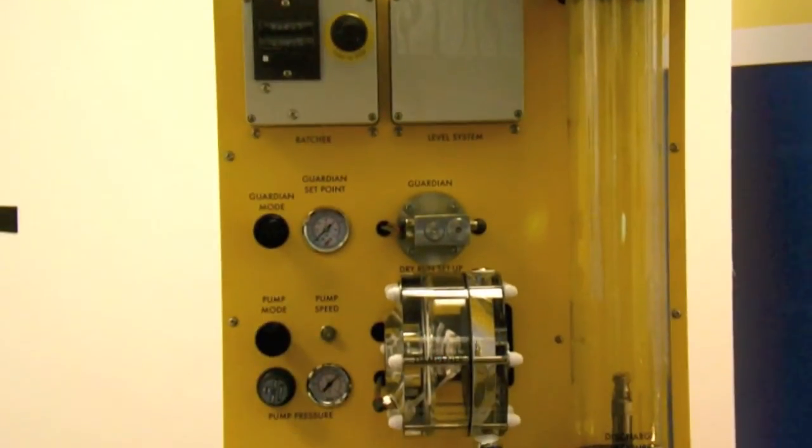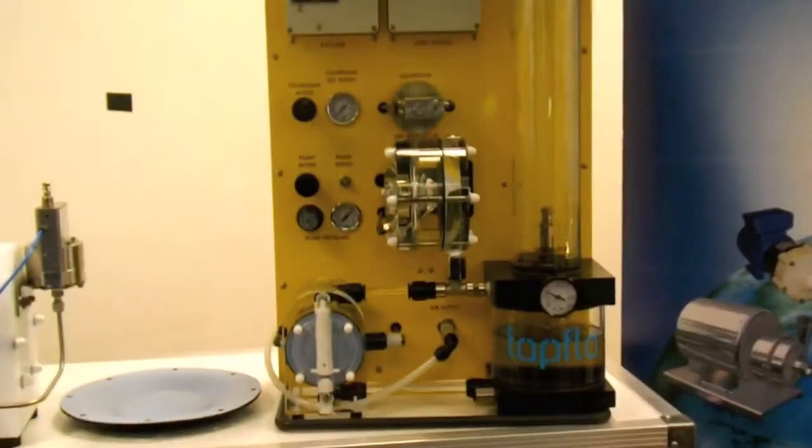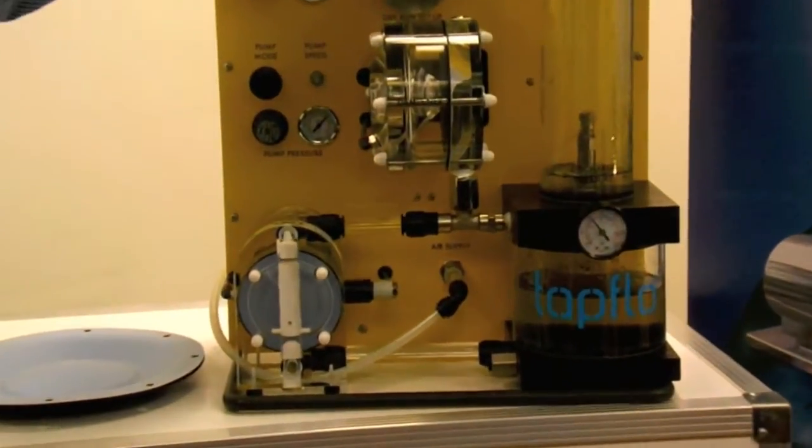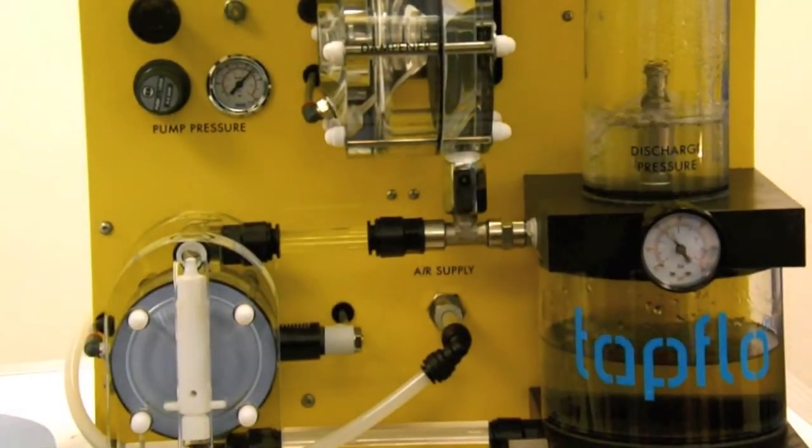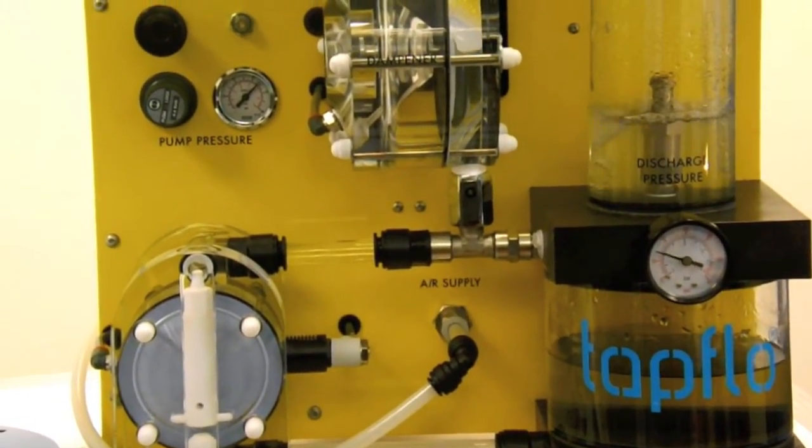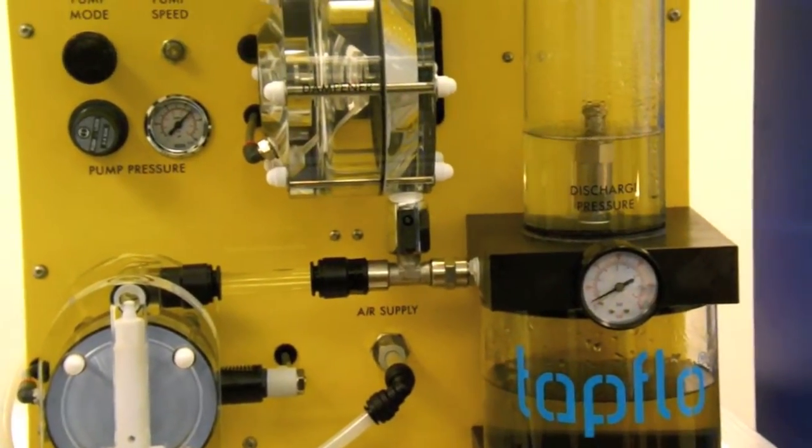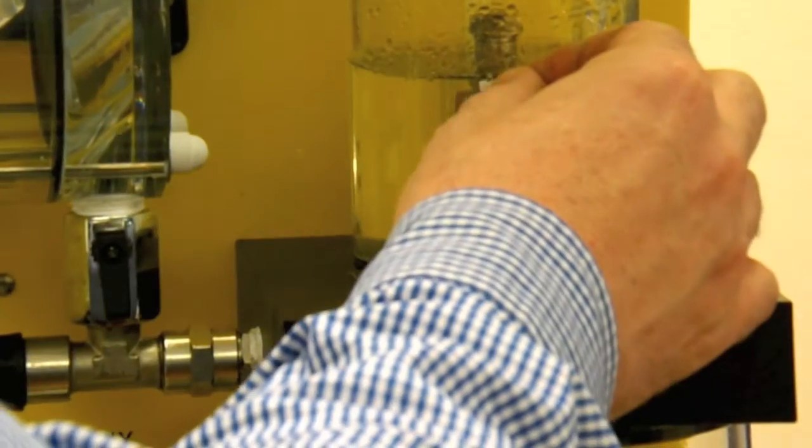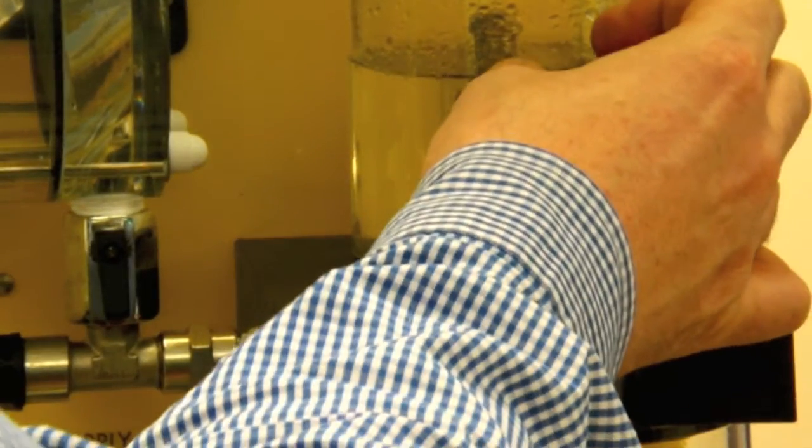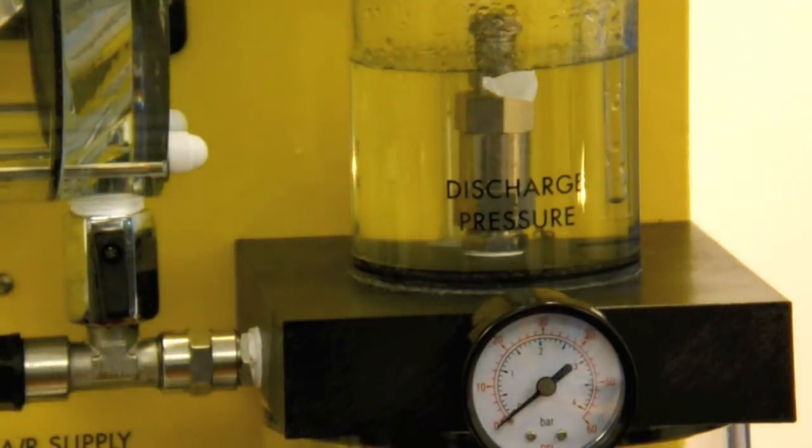And we simply activate the pump. The batcher now counts out the number of strokes the pump performs. And once it reaches 20 it shuts it off. And you can see the liquid level that we have in the top tank. Now I am going to use a little bit of tape and I am just going to mark the top of that liquid level. So you can see that is approximately where it is.